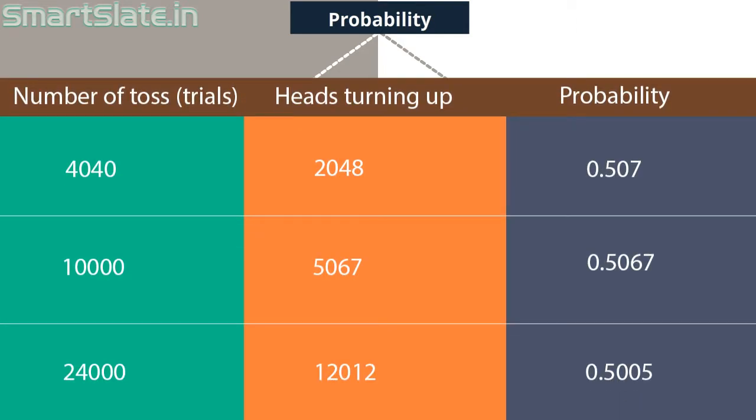When coins are tossed 4,040 times, out of 4,040, 2,048 times it turned out head. That is, probability is 0.507. Similarly when coins are tossed 10,000 times, out of 10,000, 5,067 times it was head. In this case the probability is 0.5067. Similarly when coin was tossed 24,000 times, 12,012 times it was head. Probability is 0.5005.